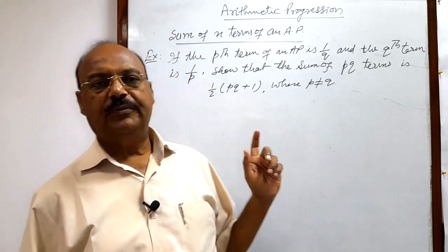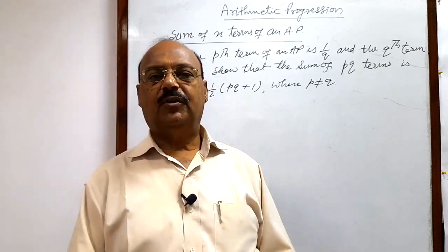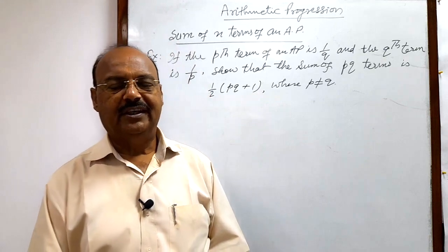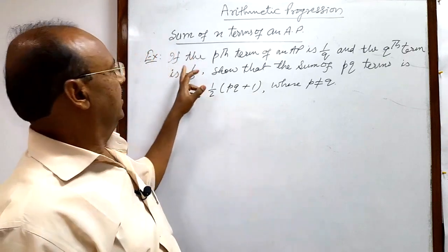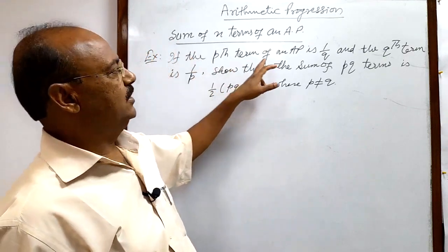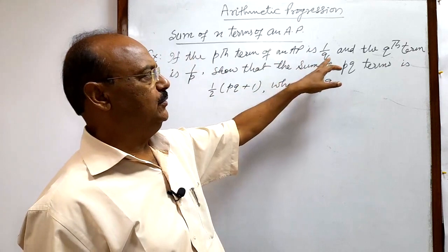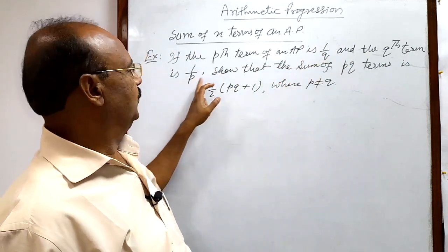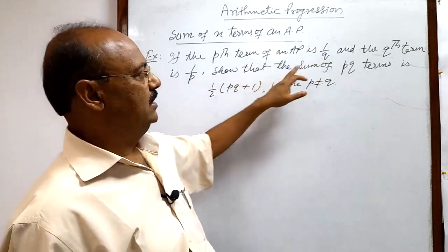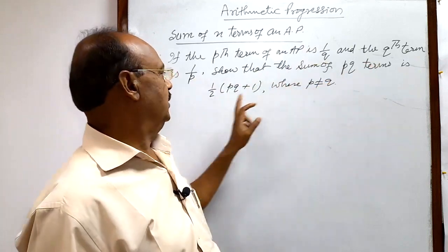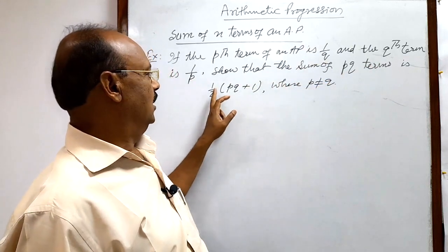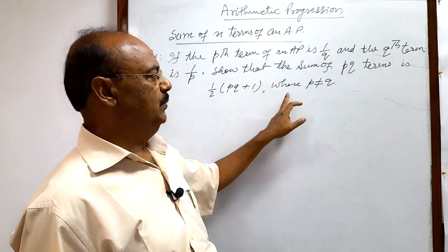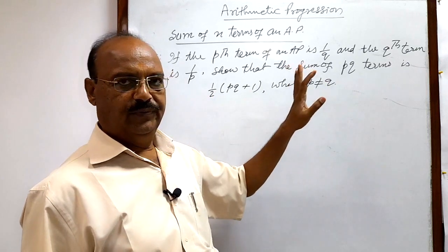Let us see this question from the topic: the sum of n terms of an arithmetic progression. The question is: if the pth term of an AP is 1/q and the qth term is 1/p, show that the sum of pq terms is half of (pq + 1), where p is not equal to q.